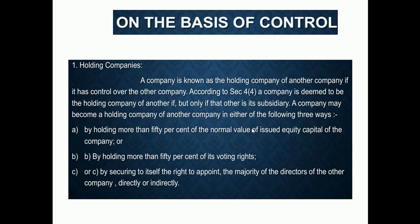On the basis of control, a company can be classified as a holding company. A company is known as a holding company of another company if it has control over the other company. According to Section 4 of the Companies Act, a company is deemed to be the holding company of another if that other is its subsidiary. A company may become a holding company in three ways: by holding more than 50% of the nominal value of the issued equity capital of the other company.